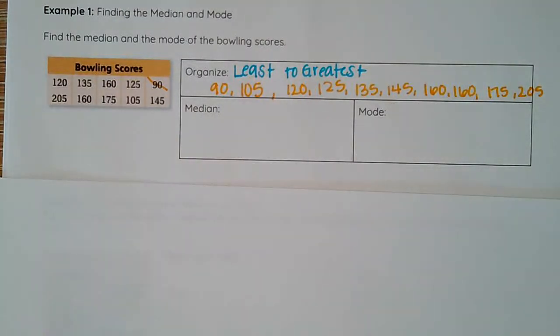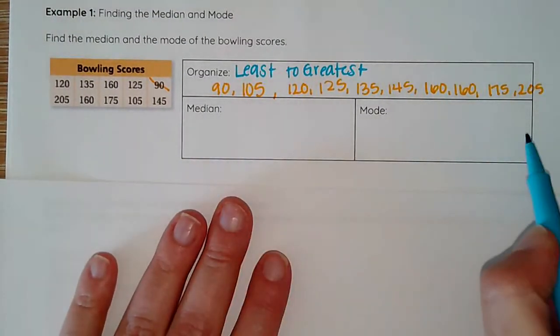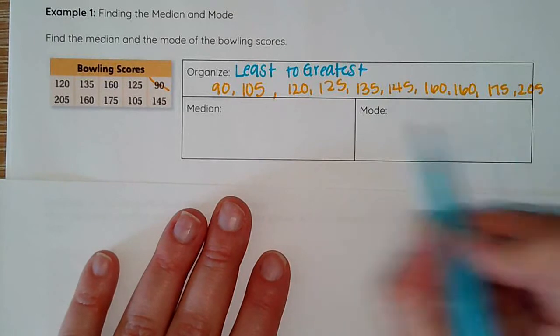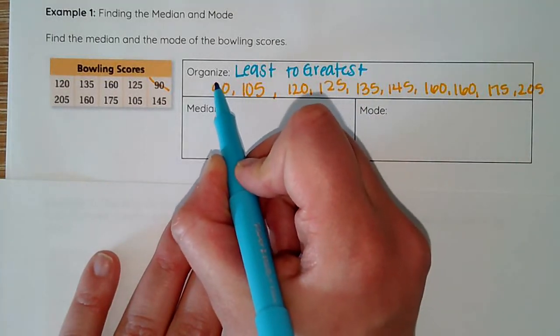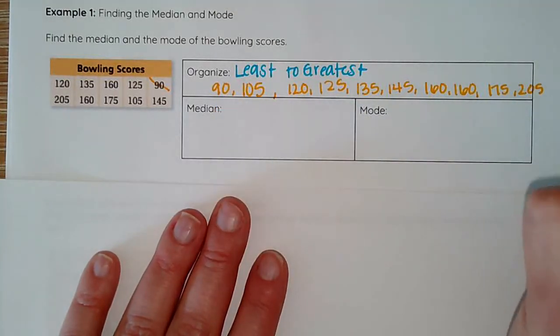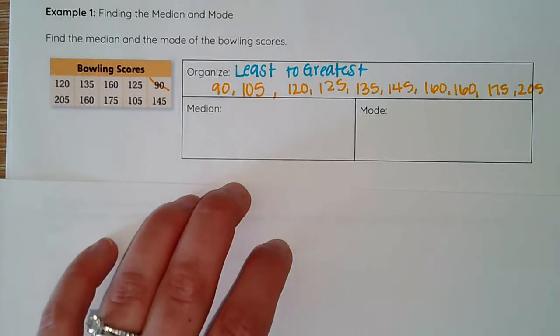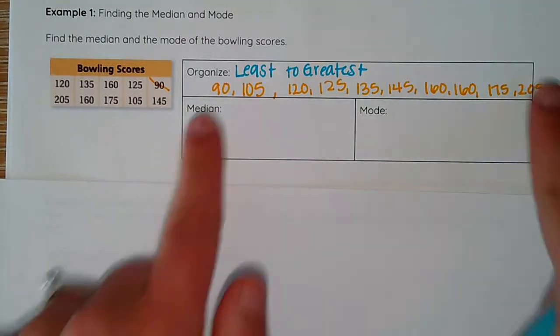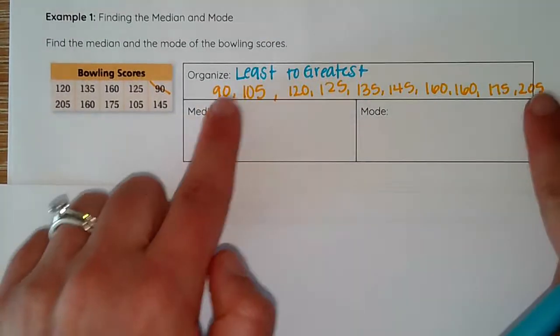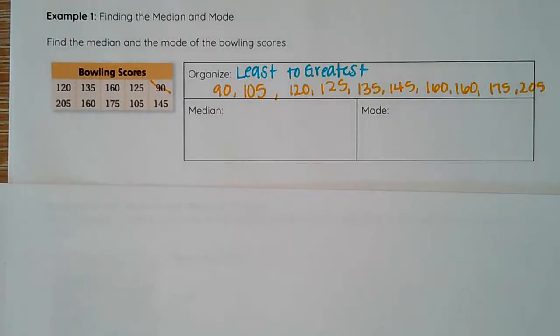Once I have my data in order, I can go ahead and start crossing them off. I want to cross off one on either side so that I can get to that middle. Some people like to cross off, others like to use fingers and work your way in, whatever works best for you. I enjoy crossing off just lightly. I just cross off just a little slash so that I can still read the number and continue working with it.